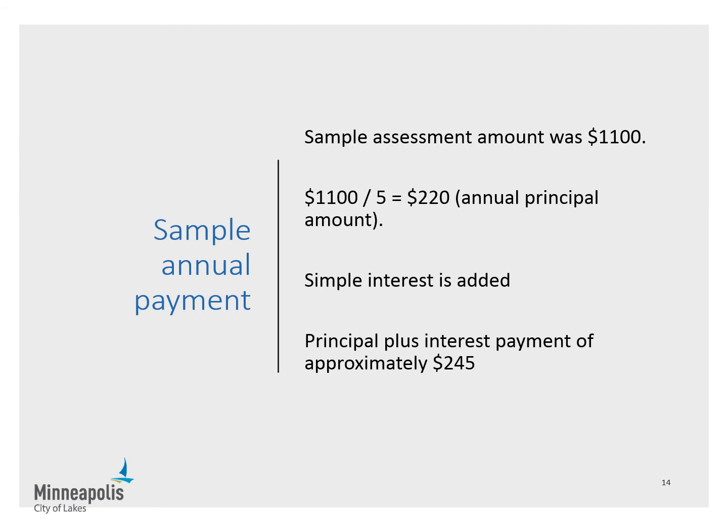Let's go back to the sample assessment we saw in an earlier slide. Our sample assessment amount was $1,100. Divided up over five years, this would result in an annual principal payment of $220. Adding in simple interest, this would bring the annual payment to approximately $245.